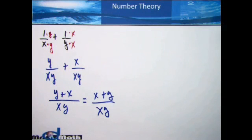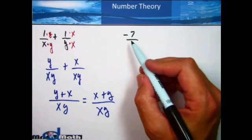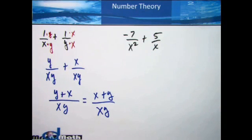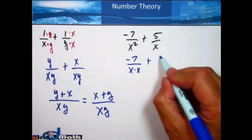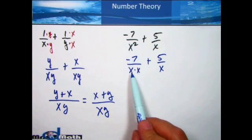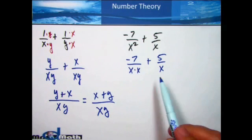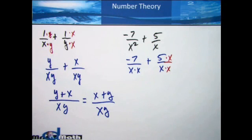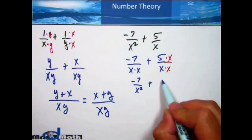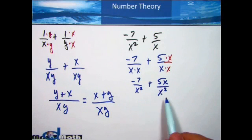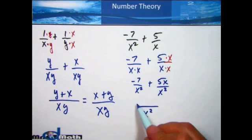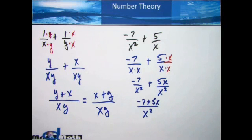Let's take a look at another one with some numbers other than 1 and some negatives: negative 7 over x squared plus 5 over x. We look at the factors: negative 7 over x times x, plus 5 over x. The first denominator has two x's; the second has only one x, so this one needs another x. I multiply by x on both top and bottom. Now I have negative 7 over x squared plus 5x over x squared. I have common denominators with unlike terms, so I'm left with negative 7 plus 5x over x squared. That is actually complete — there's nothing else to do.